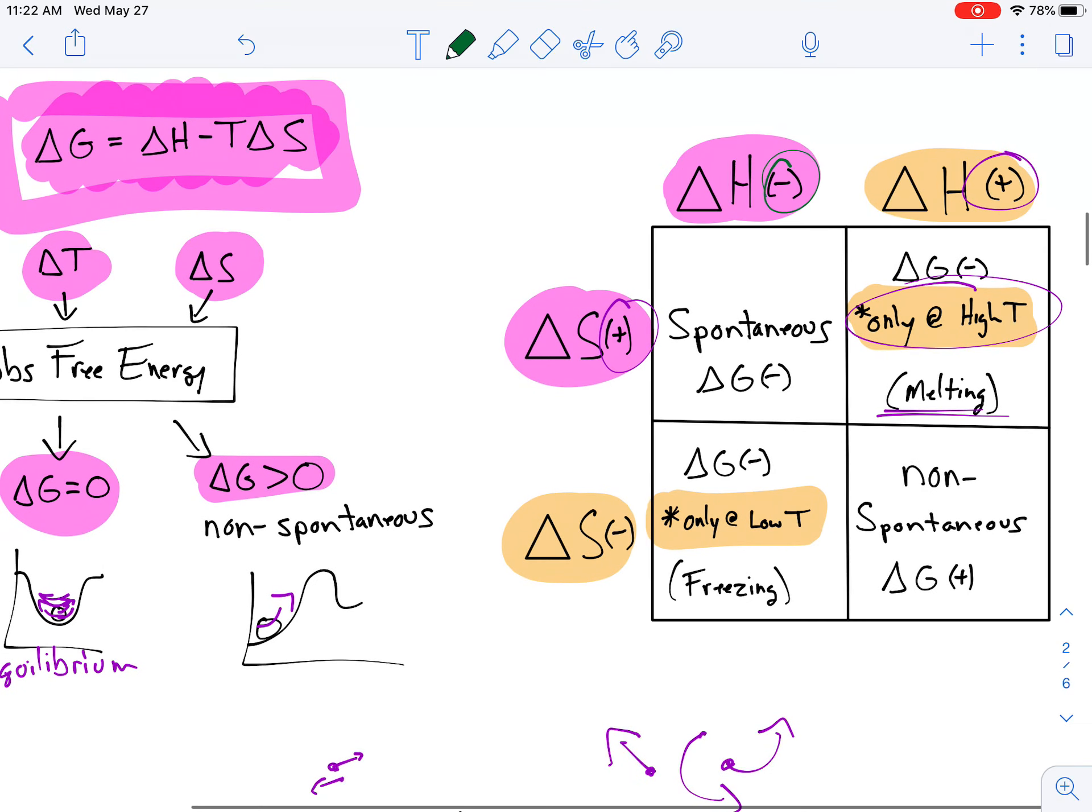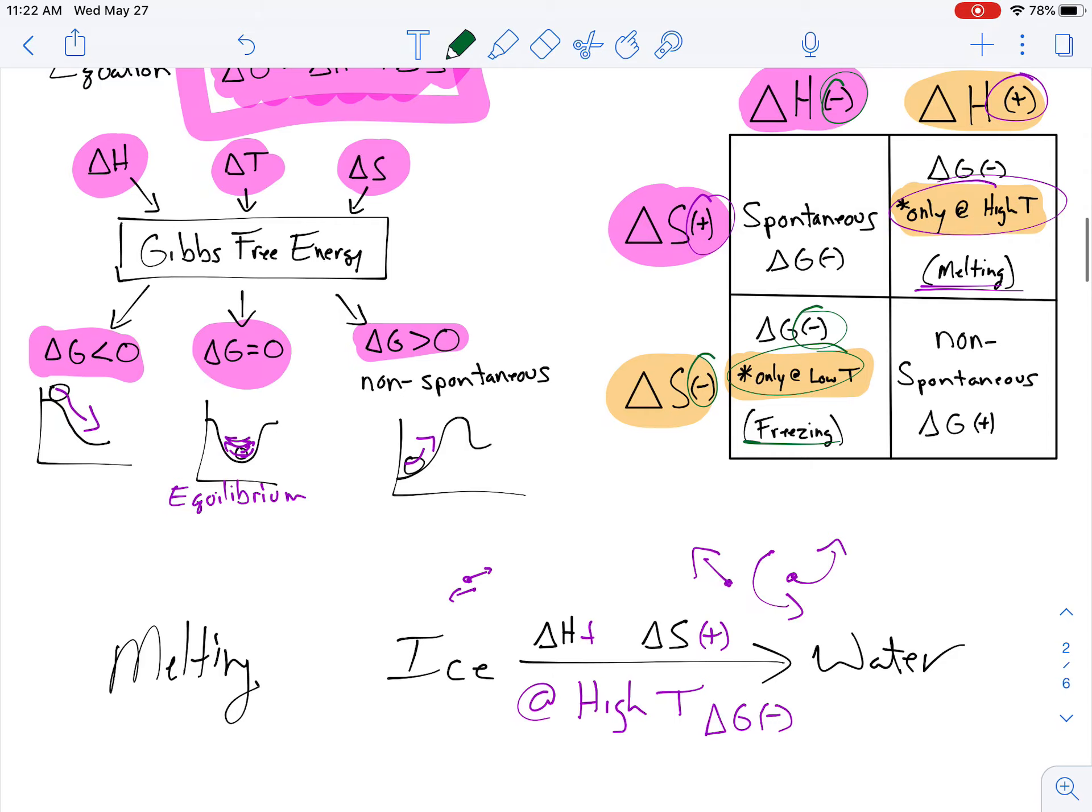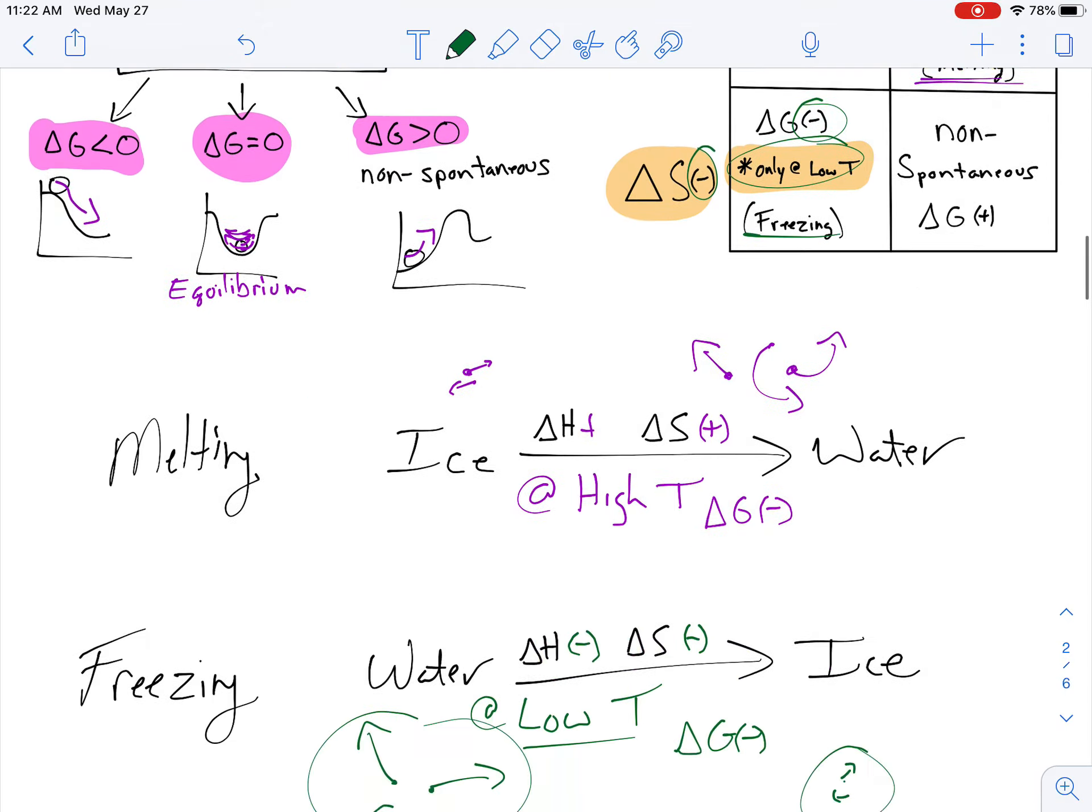Let's take a look up here. Oh, negative, negative at low temperatures, like freezing, delta G is negative once again. So, from this information, we're trying to figure out whether or not something is thermodynamically favored, or whether or not it's spontaneous or not.